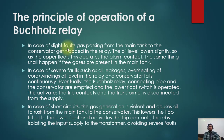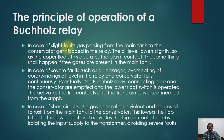If the transformer has been in service for a long time and the Buchholz operates, you need to investigate the reason. In the case of severe faults — such as oil leakage or overheating of the core and windings — the oil level in the relay and conservator falls continuously. Eventually the Buchholz relay's connecting pipe and conservator are emptied, and the lower float operates, activating the trip contact and disconnecting the transformer from the supply.